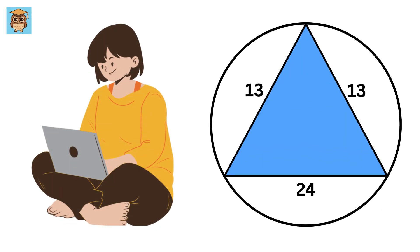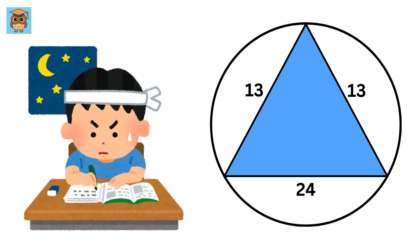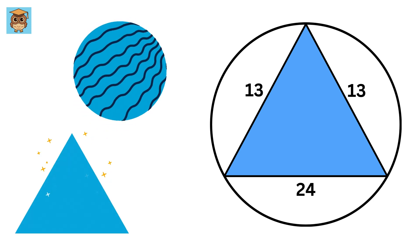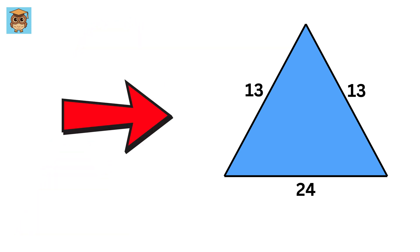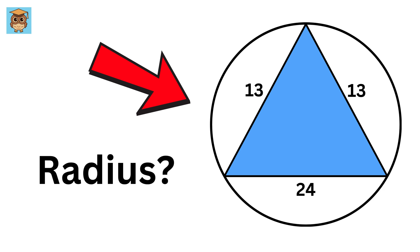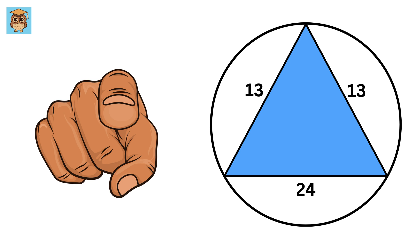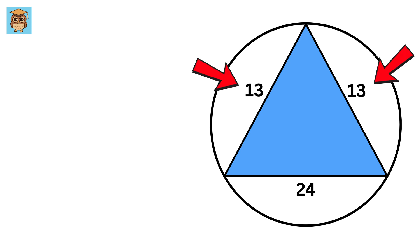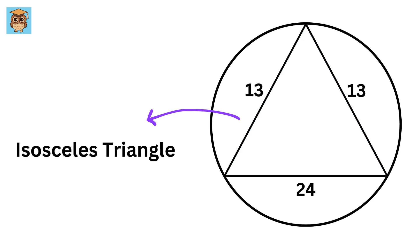You are definitely going to love this problem because it is going to teach multiple concepts related to circles and triangles. We have this triangle and our job is to find the radius of this circle. Consider these two sides of this triangle—they are equal, therefore it is an isosceles triangle.